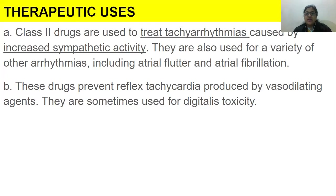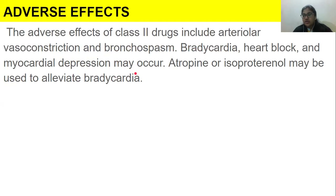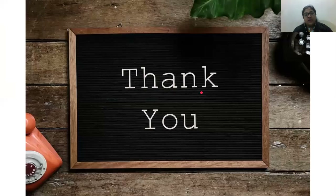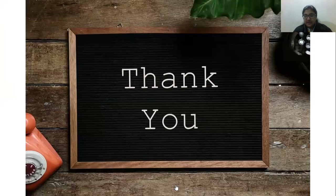Adverse effects include arteriolar vasoconstriction and bronchospasm, due to the compensation mechanism. Bradycardia, heart block, and myocardial depression may also occur, as these drugs depress heart rate. Atropine or isoproterenol may be used to treat bradycardia. That is it for Class 2 anti-arrhythmic drugs.